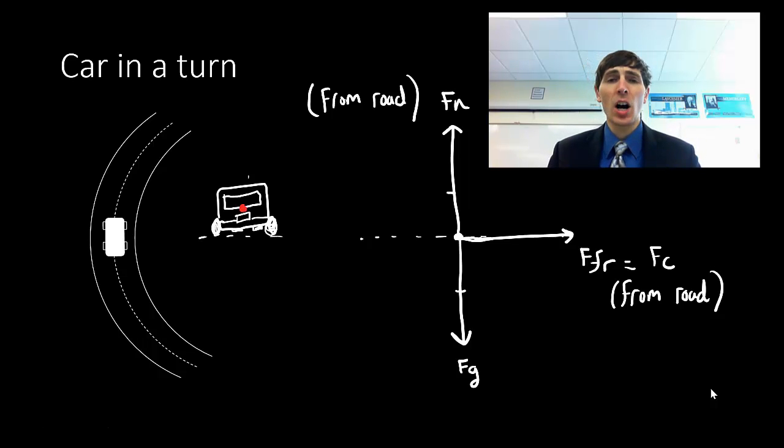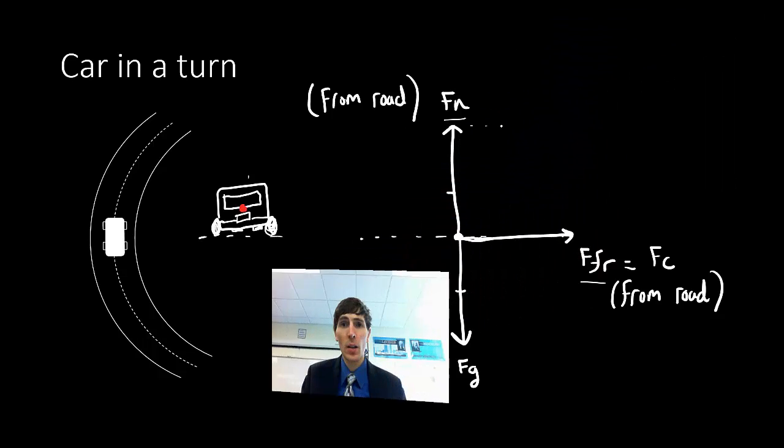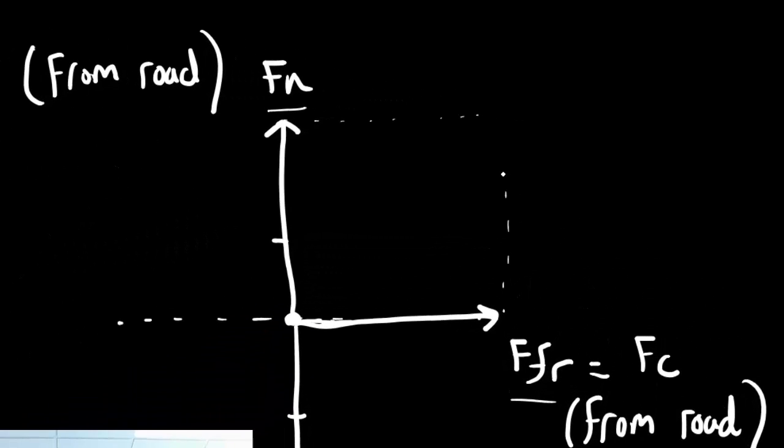I want to first look at a car going around a turn and talk about something special that's going on. When I look at a car going around a turn, we've seen this example before. I have the normal force and the force of gravity, and then there's that force of friction, which in this case is the centripetal force pushing or pulling it towards the center of the circle. What's interesting to note is that both the normal force and the force of friction are actually supplied by the same object, and that's the road. So if we think about the fact that the road is pushing both up and over, it's reasonable to assume that if you were the road, you're actually pushing on the car at somewhat of an angle.